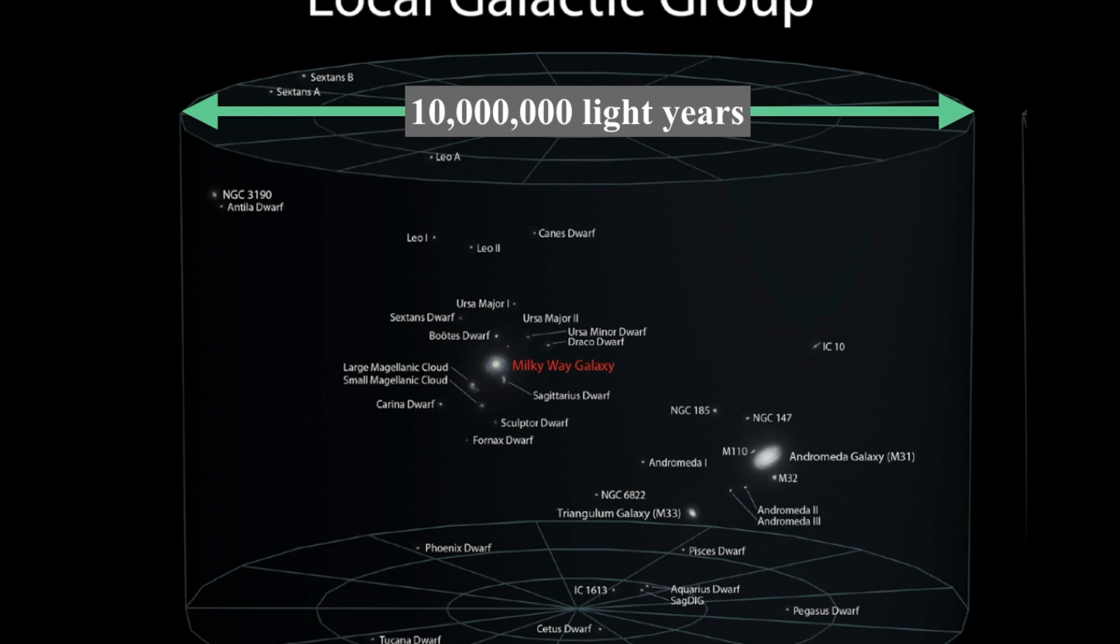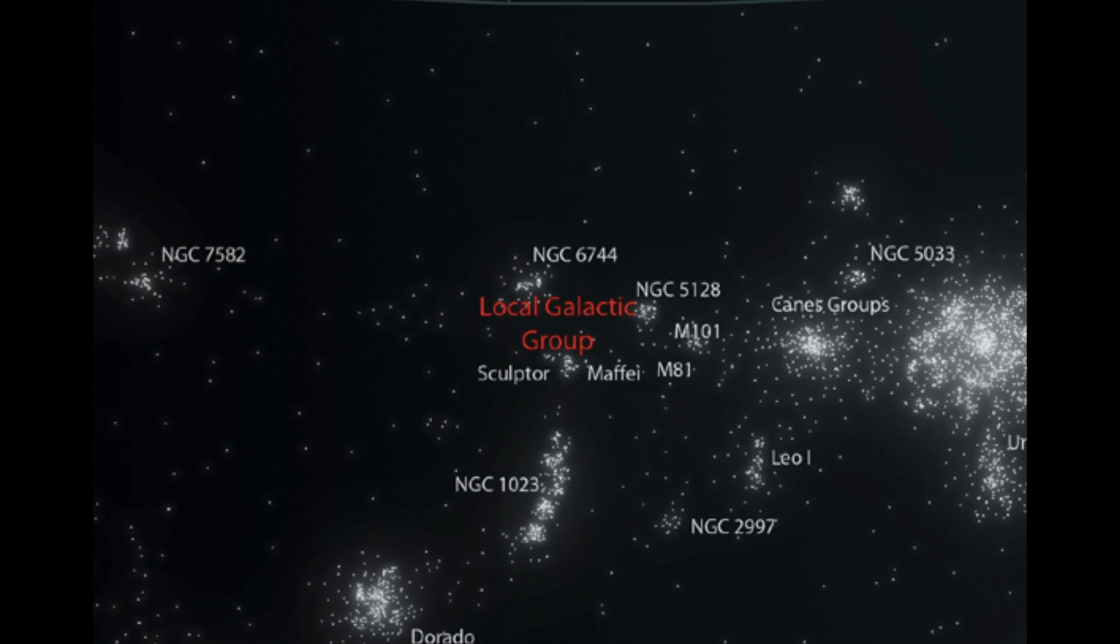And the Milky Way and Andromeda are falling towards each other and will collide in about 5 billion years or so, long after the Sun has burned out. All right, so we zoom out even further and look at the center of this image is the local galactic group.